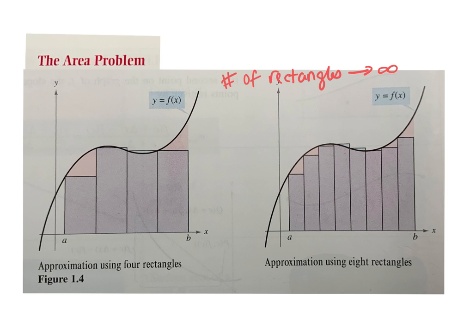They're going to use limit theory — as it approaches, even though I can't tangibly touch it, I can see the pattern of what's happening as it approaches, and then I'll be able to figure out what the area is. These are the two major problems that caused mathematicians to push away from Euclidean geometry and Platonic solids toward something that's changing — taking that information and applying it to something that doesn't fit that mold.